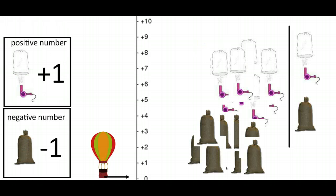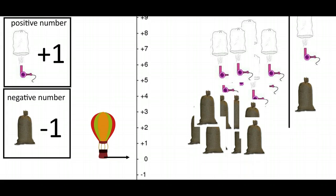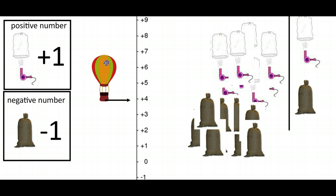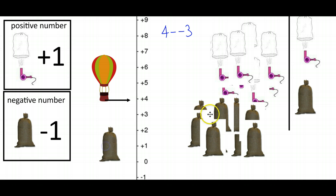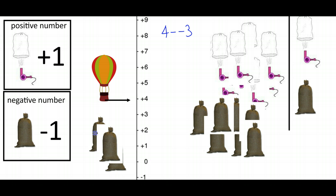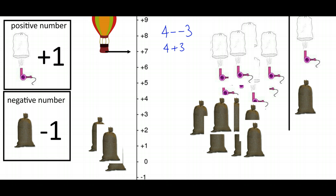I can use all sorts of combinations of hot air and sandbags. Let's say after some hot air and sandbags I'm floating at four. Now I want to take away minus three — I'm subtracting some weights, removing one, two, three sandbags overboard. Taking them away means I actually go upwards — three higher than four — so I end up on seven.